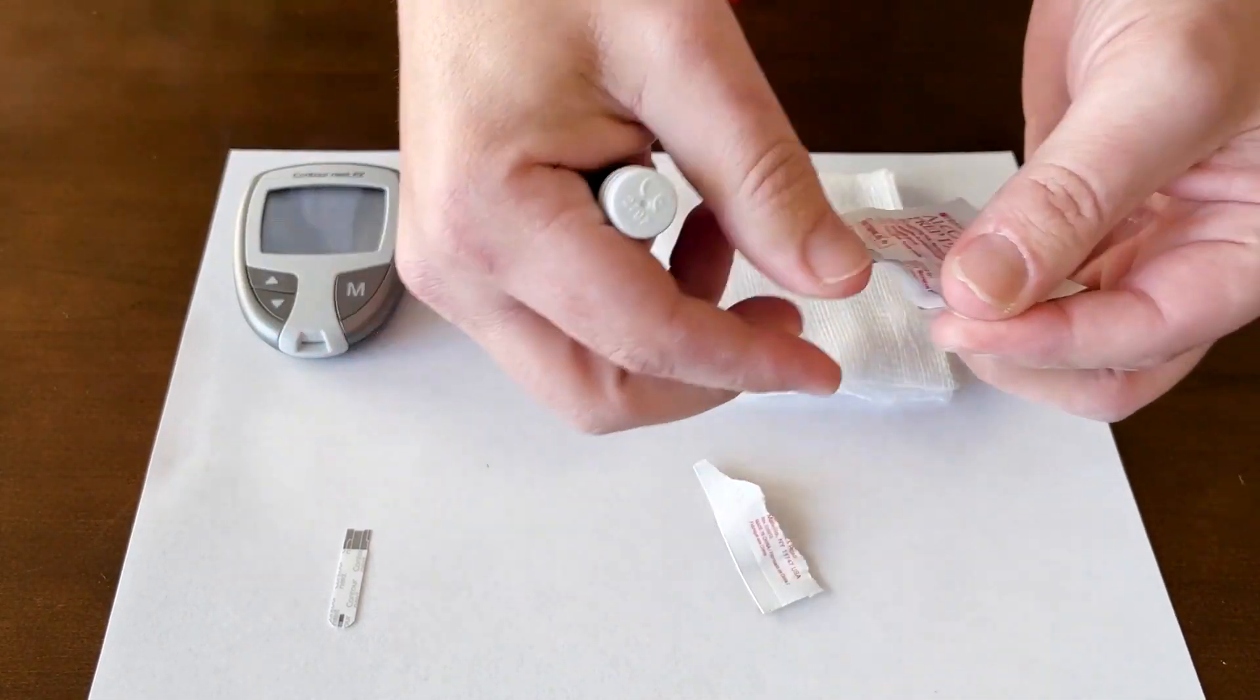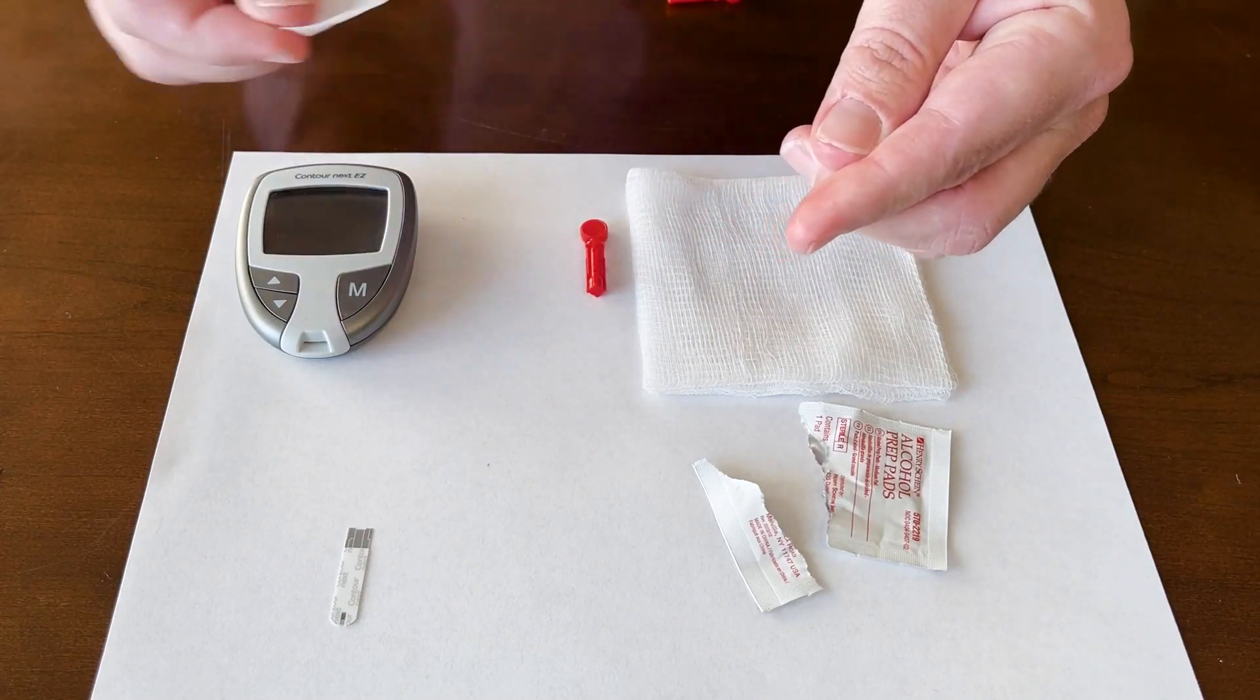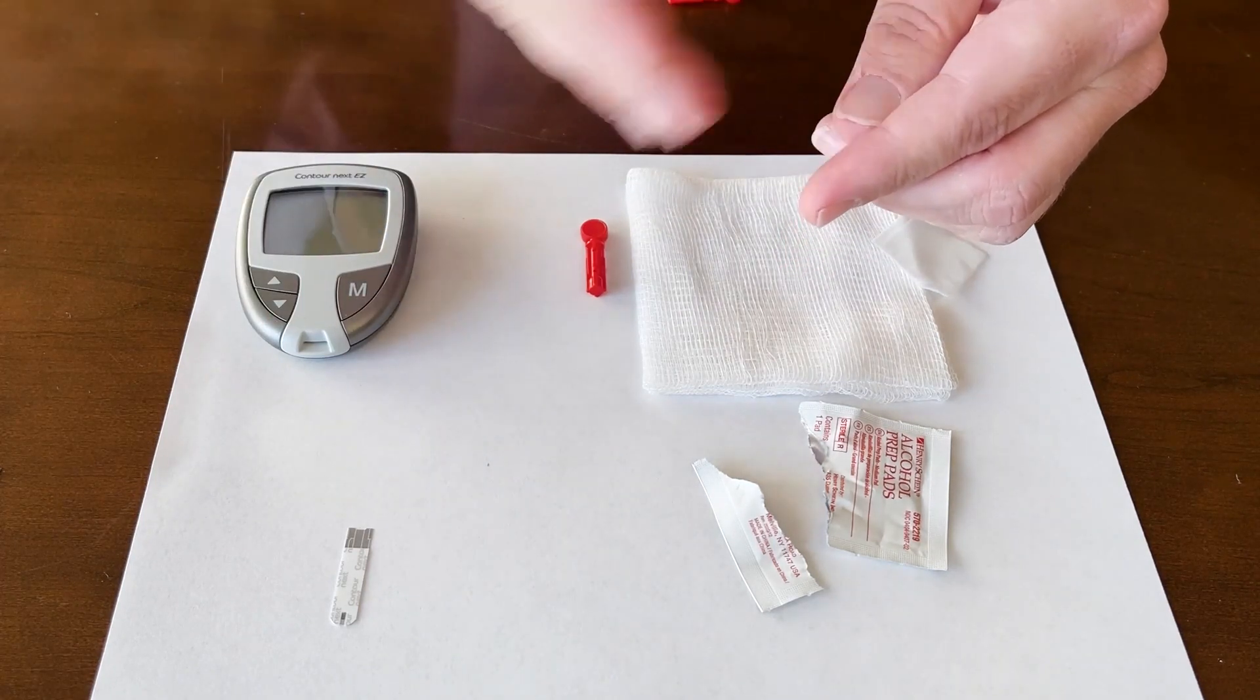We're going to take our alcohol swab. We're going to find the finger we're going to do, take the alcohol, and then we're going to let the alcohol evaporate.